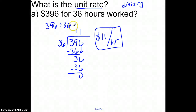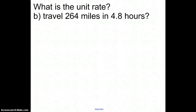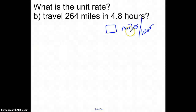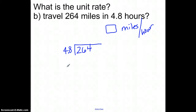Here's another unit rate problem. In this one, they want to know how many miles per hour — you travel 264 miles in 4.8 hours, so miles per hour is our unit rate. We take our miles and divide them by hours. On Blackboard, when you get the answer box, it gives you a hint that it's going to be miles divided by hours. So 264 divided by 4.8 — I have to move the decimal over 1 in both numbers, which is really like taking 48 and dividing it into 2,640.